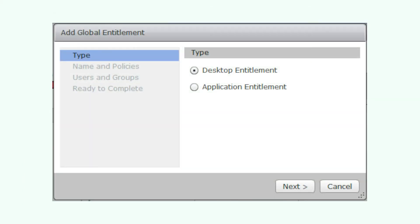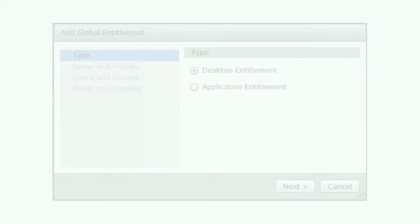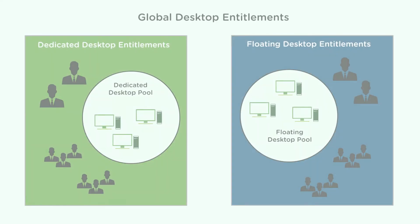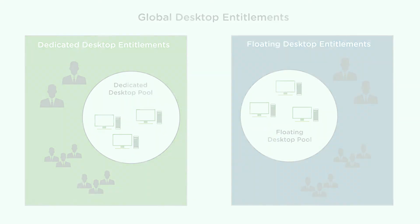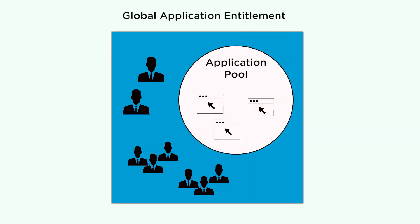There are two types of global entitlements: global desktop entitlements and global application entitlements. A global desktop entitlement contains entitled users and groups and desktop pools that can provide desktops for the entitled users. The desktop pools can be floating pools or dedicated pools. A global application entitlement contains entitled users and groups and application pools that can provide applications for the entitled users.